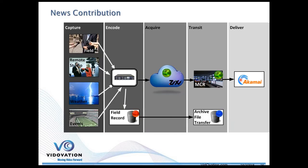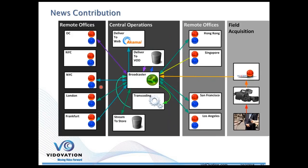For news contributions, someone in the field, someone in the studio, or someone in a remote area covering weather or a live event can all hit a Zixi encoder and feeder. The feeder can dump it into the Zixi cloud, push it directly to archive, or push to your master control room. From there, it gets pushed back out using Zixi to Akamai for delivery to the home, to the web, or to mobile devices.